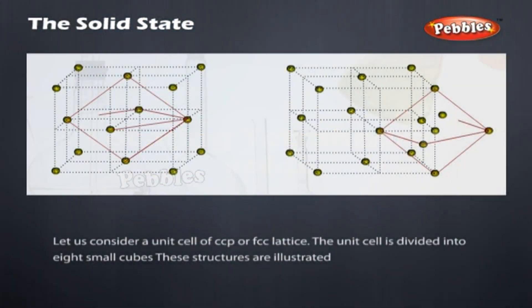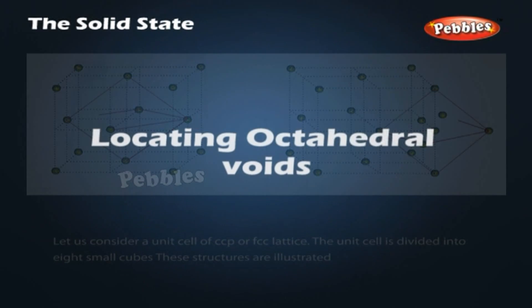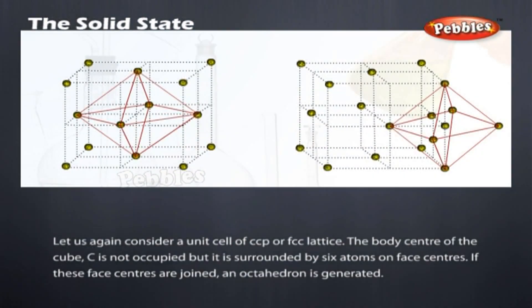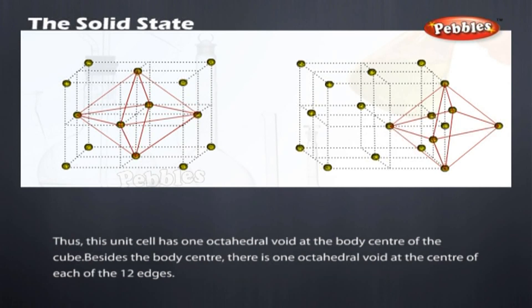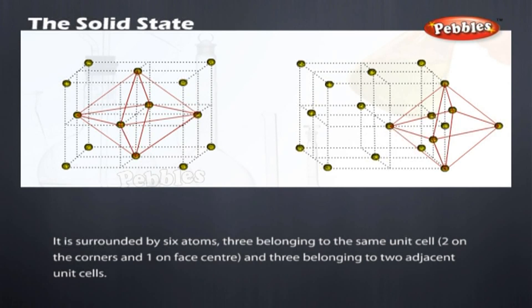Locating tetrahedral voids. In a unit cell of CCP or FCC lattice, the unit cell is divided into eight small cubes to locate tetrahedral voids. Locating octahedral voids: the body center of the cube is not occupied but is surrounded by six atoms on face centers. When these face centers are joined, an octahedron is generated. Thus, this unit cell has one octahedral void at the body center. Besides the body center, there is one octahedral void at the center of each of the twelve edges, surrounded by six atoms — three belonging to the same unit cell and three belonging to two adjacent unit cells.